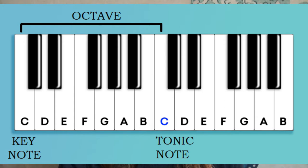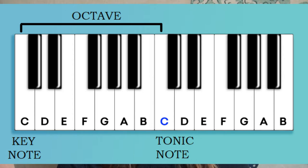An octave is an arrangement of notes starting and ending on the same note. If we use A for example: A, B, C, D, E, F, G, A — there is an octave of notes. If all melodies are made from notes, how do we choose our notes? That's where scales come in.